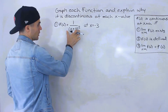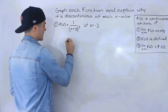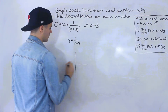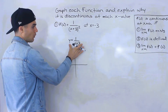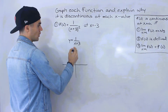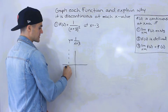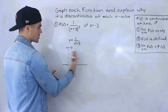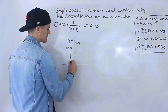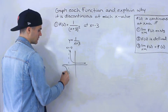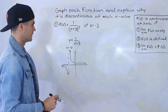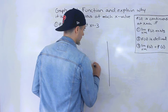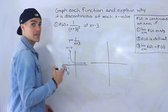So a rough sketch of this — I'll start off by graphing one over x plus three, and then I'll show you the difference between one over x plus three and one over x plus three squared. For one over x plus three, the vertical asymptote is at x equals negative three as well. It's just the graph of one over x shifted three to the left. Notice with one over x plus three squared, it can never be negative.